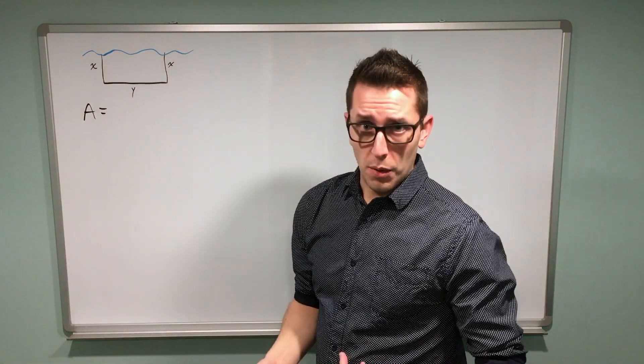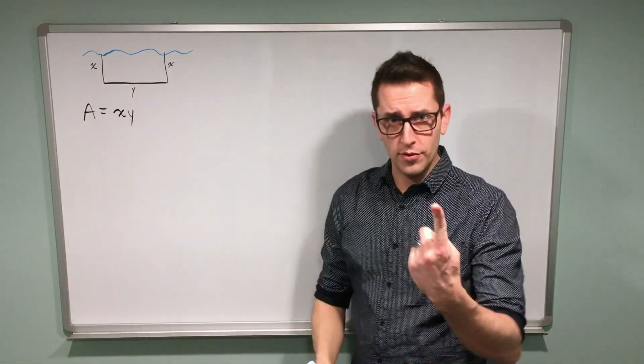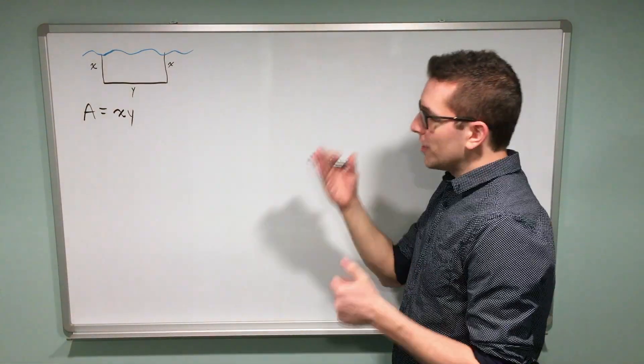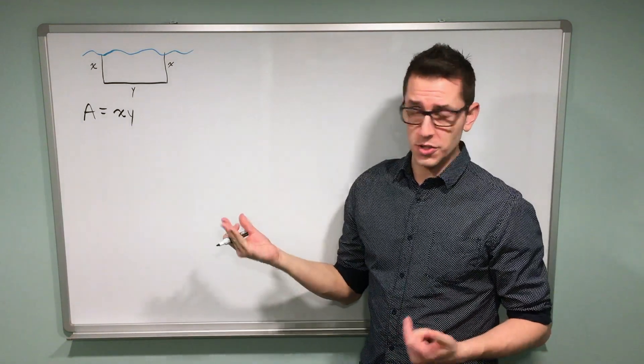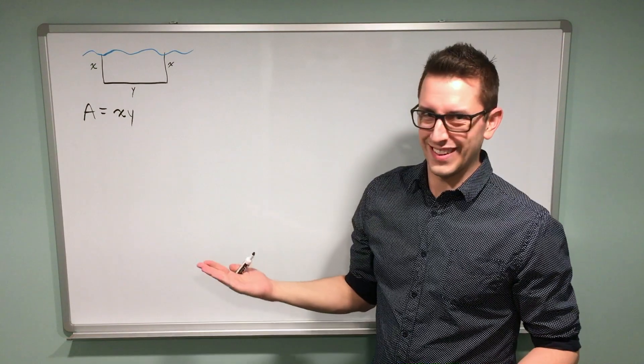So I know the area of a rectangle is length times width. In this case, I'm going to write it as A = x times y. That's our first step. Our goal is to find the maximum area. I want to eventually take the derivative of this function, but you can see I can't do that because I've got two unknowns.